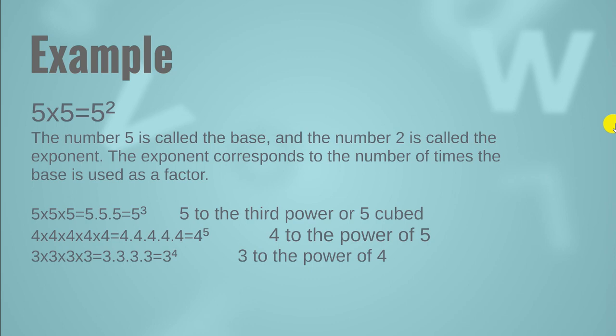For example, if we have three fives, then the exponent will be 3. If we have six factors, or we are going to multiply the same number six times, then we are going to have the number six as an exponent.